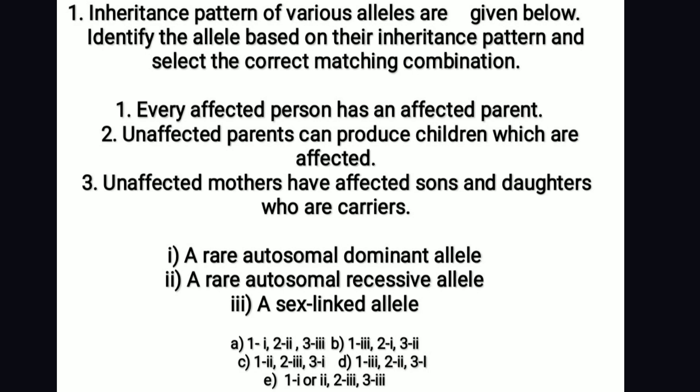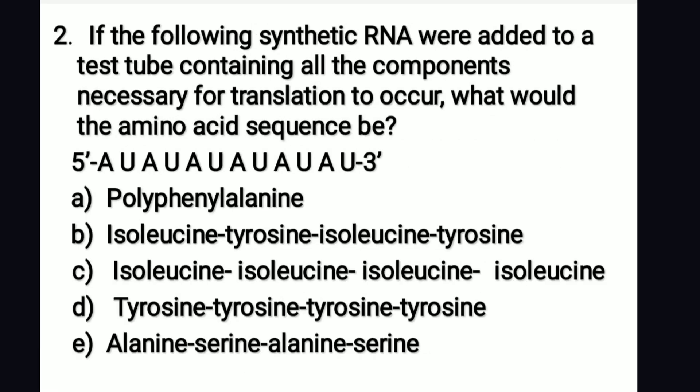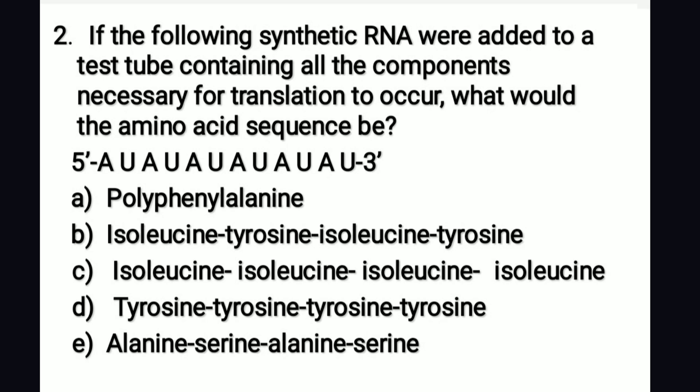Following synthetic RNA were added to a test tube containing all components necessary for translation. What would the amino acid sequence be? The right answer is option B: isoleucine, tyrosine, isoleucine, tyrosine. The two codons here are AUA and UAU. AUA codes for isoleucine; UAU codes for tyrosine.